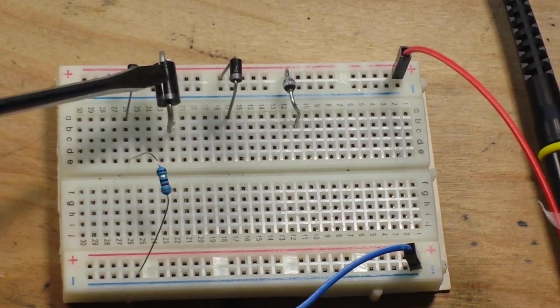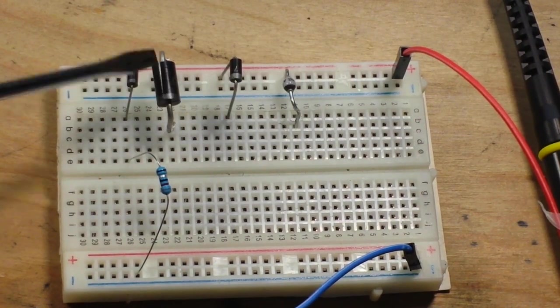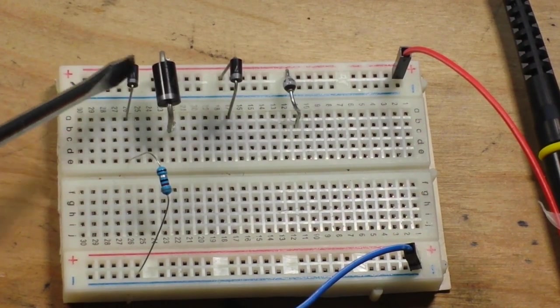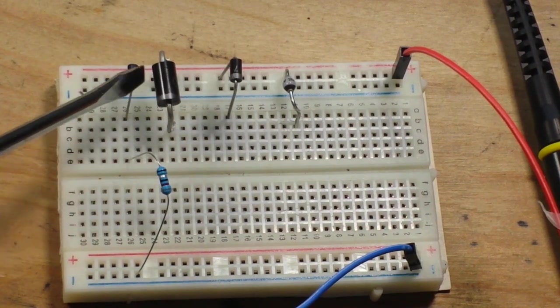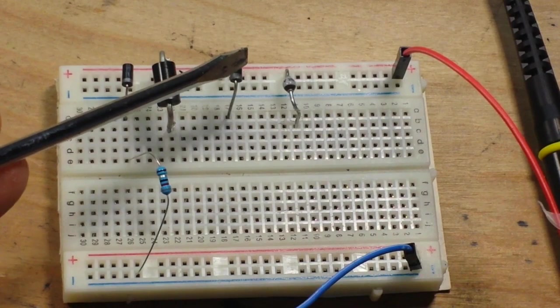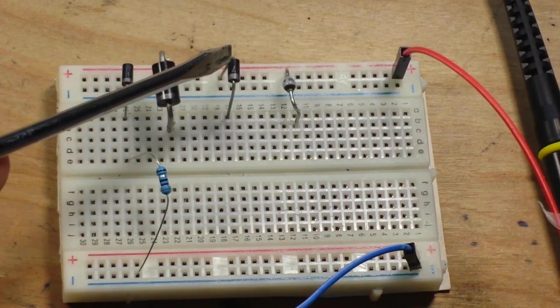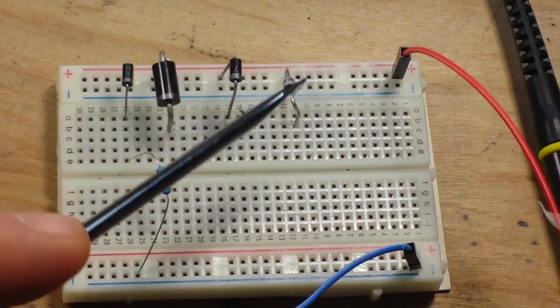This is a 1N5400, which is a larger rectifying diode, but basically they are the same. They are a silicon junction diode. Next, we have a Schottky diode. This is a 1N5817.